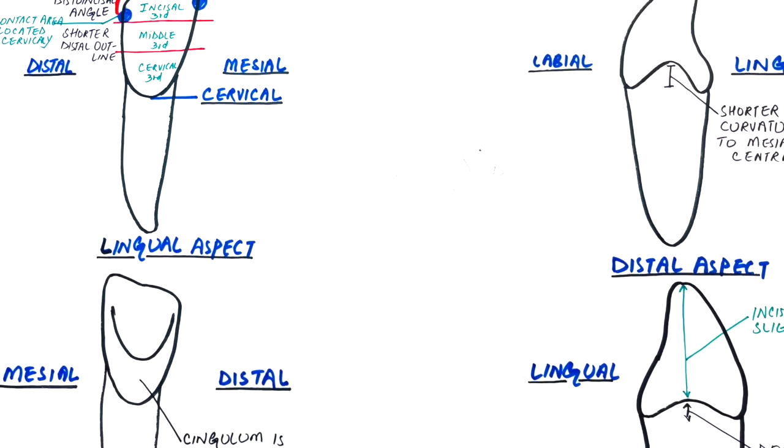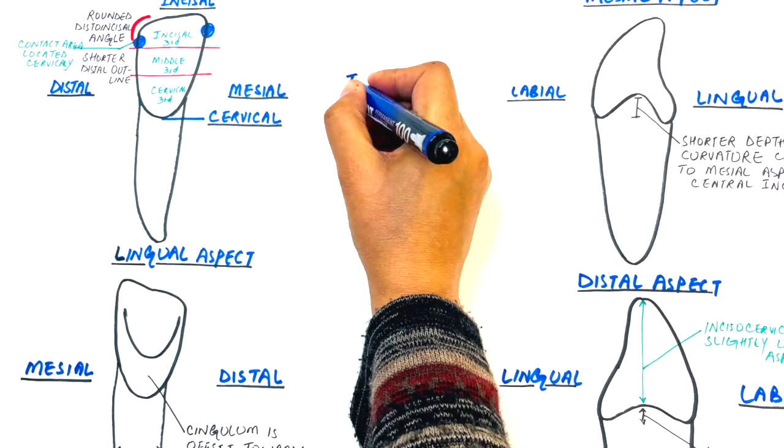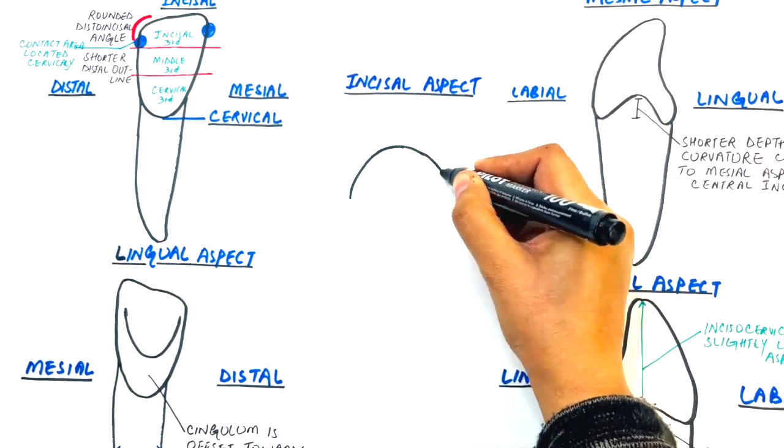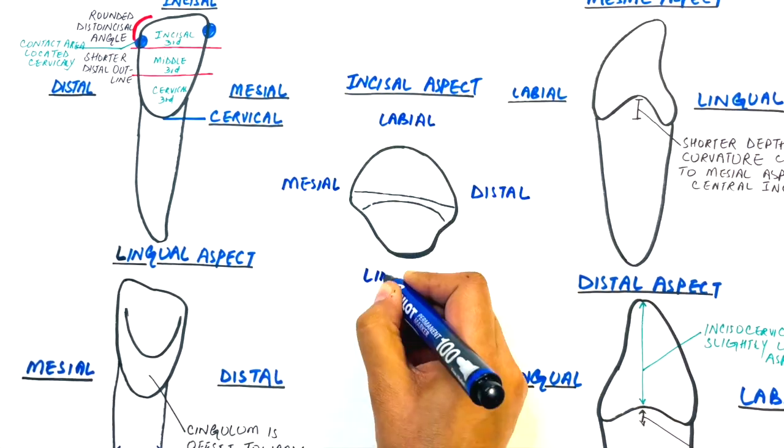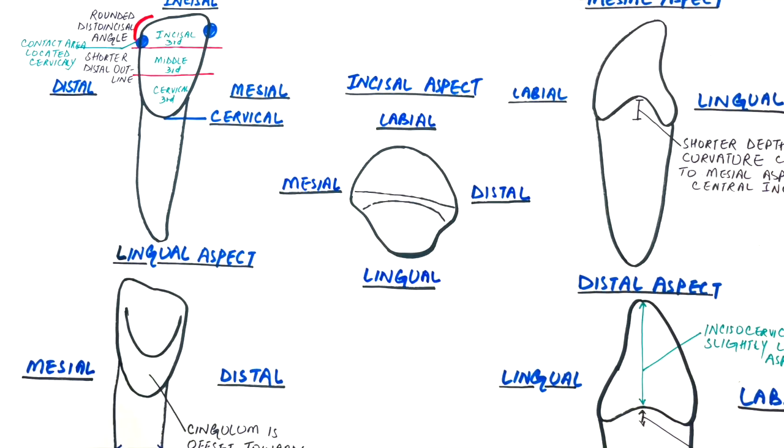From the incisal aspect, the tooth has a labial, lingual, mesial and distal outline. Unlike the incisal aspect of the central incisor, the mesio-distal dimension is not straight. It curves towards the lingual in its distal portion.